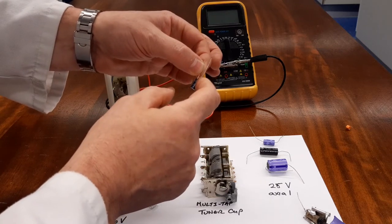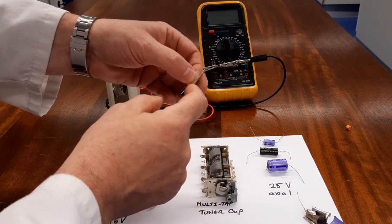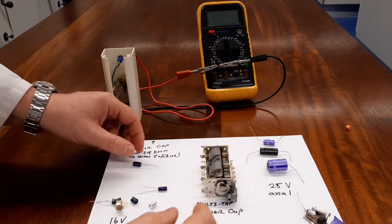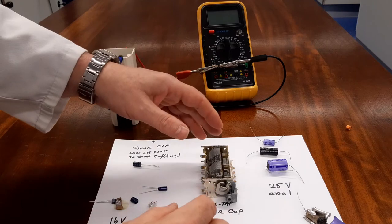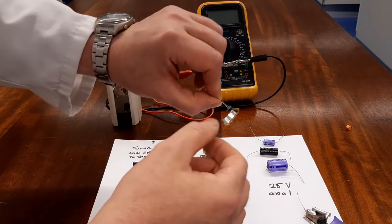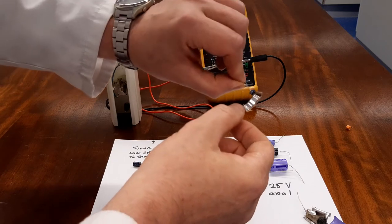These are the two differences. One's axial, one's radial. What I've done is I've taken one of these radial ones apart, and you can see